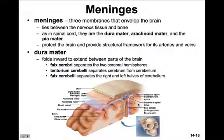The meninges are the membranes that envelop the brain. They're very similar to those that we see in the spinal cord. They lie between the nervous tissue and the bone. They are called the dura mater, arachnoid mater, and pia mater, and they protect the brain and provide structural framework for all of the arteries and veins to travel through.